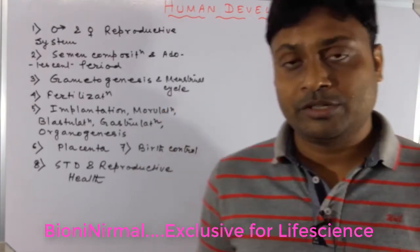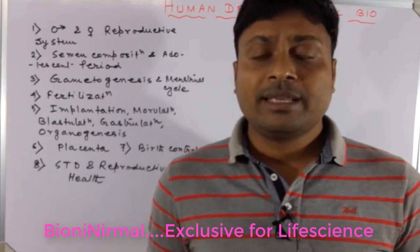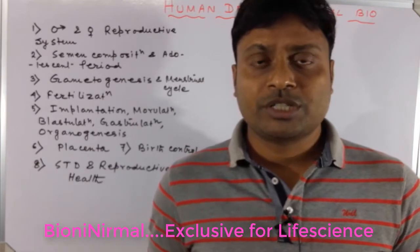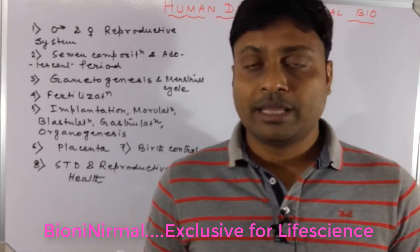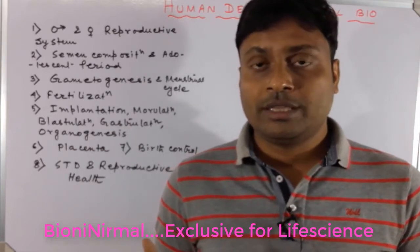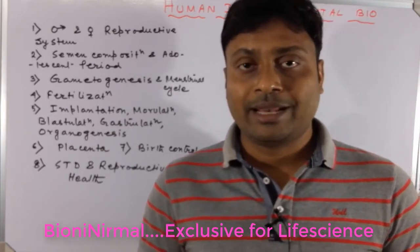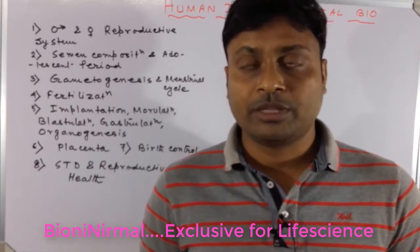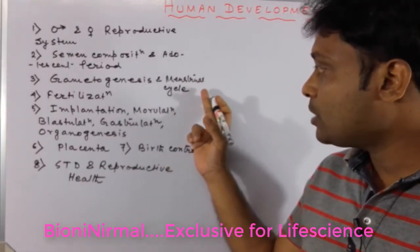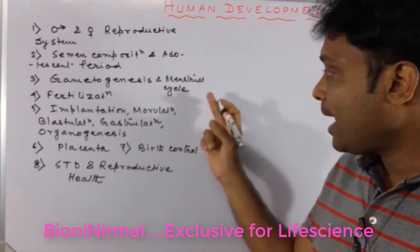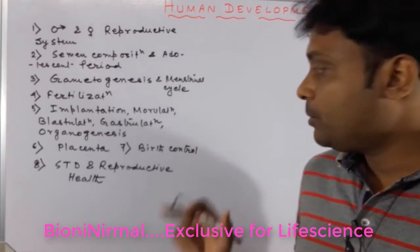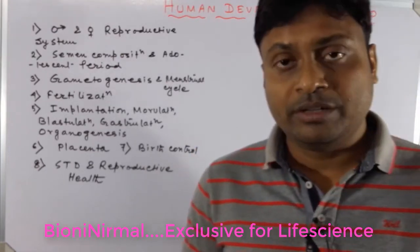Just after reading gametogenesis you should have a clear concept of the menstrual cycle. In the human female the menstrual cycle occurs, and estrogen, progesterone, and the gonadotropic hormones FSH and LH and their roles are important. You should have a clear concept about the phases of the menstrual cycle, because without understanding these phases you cannot understand birth control methods.